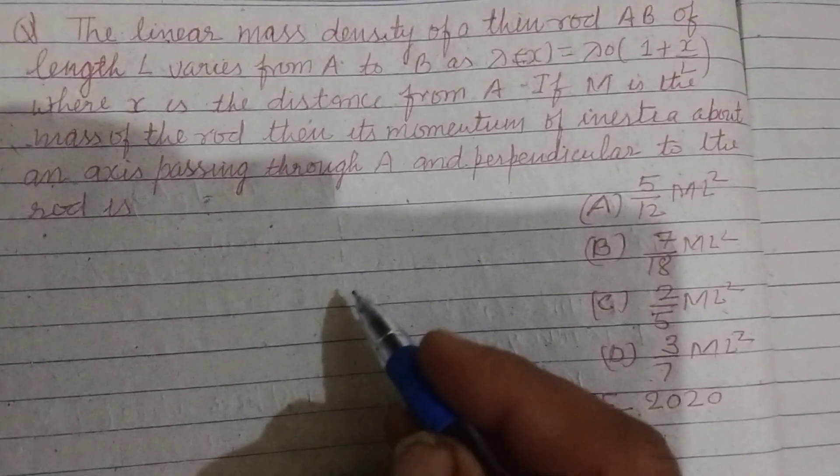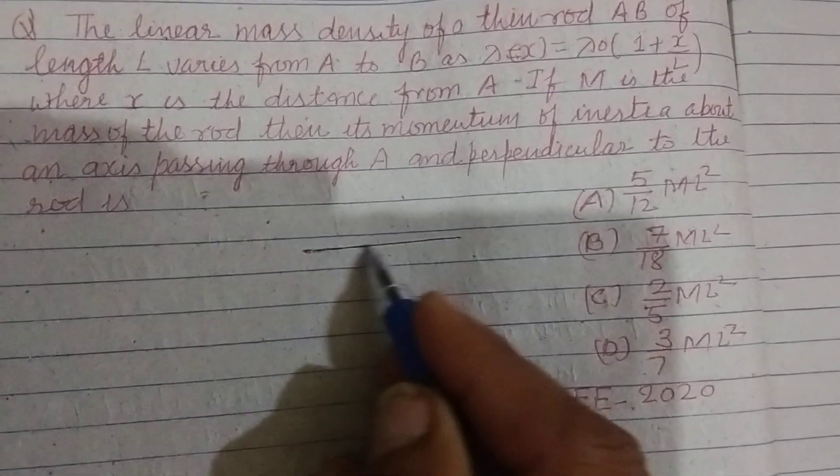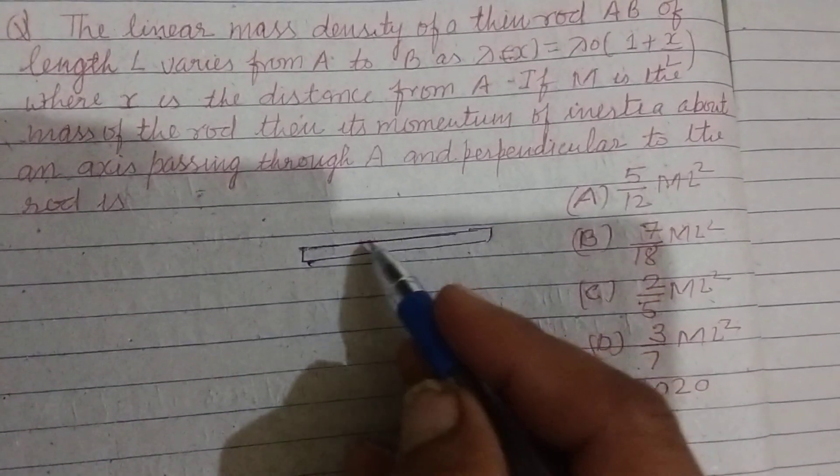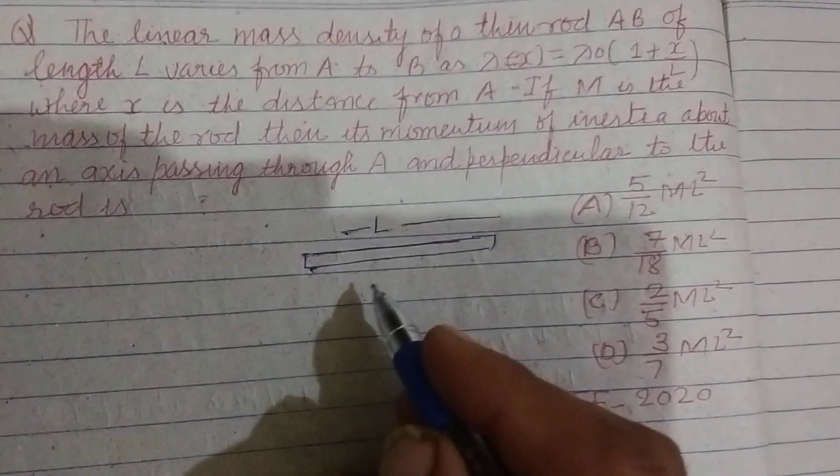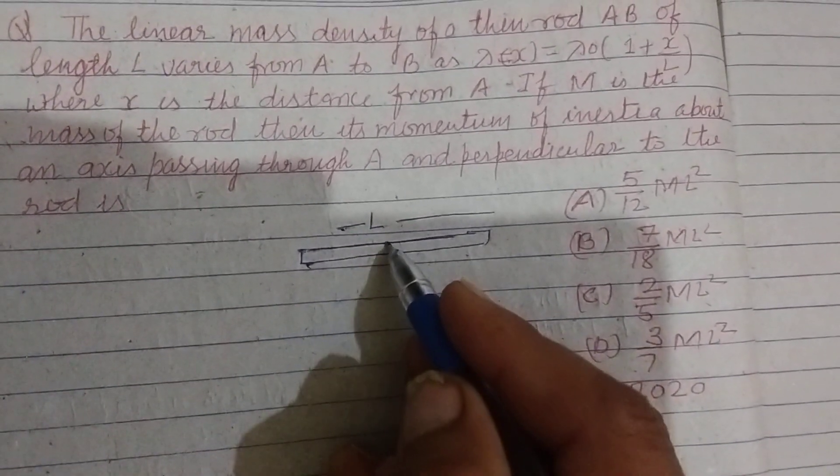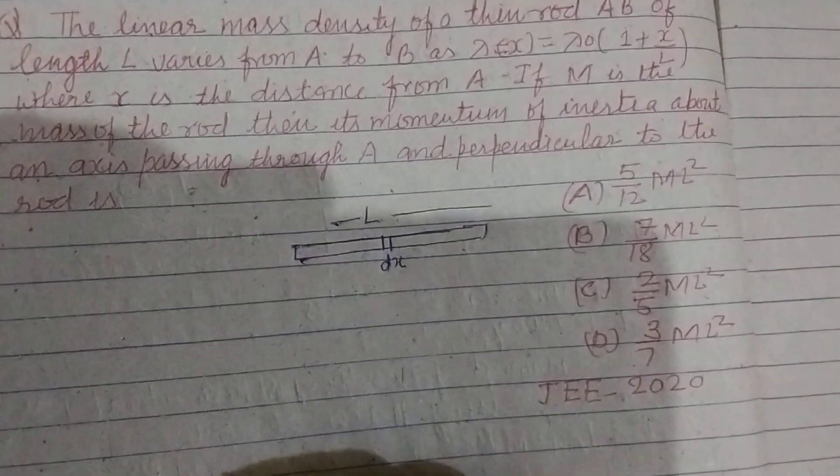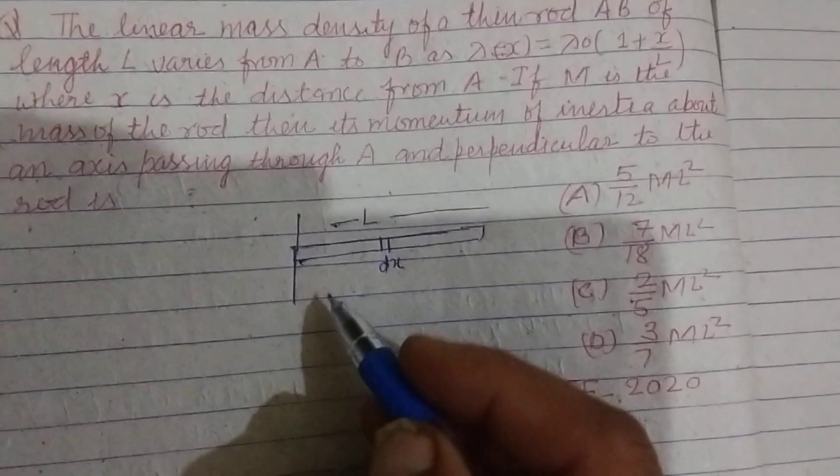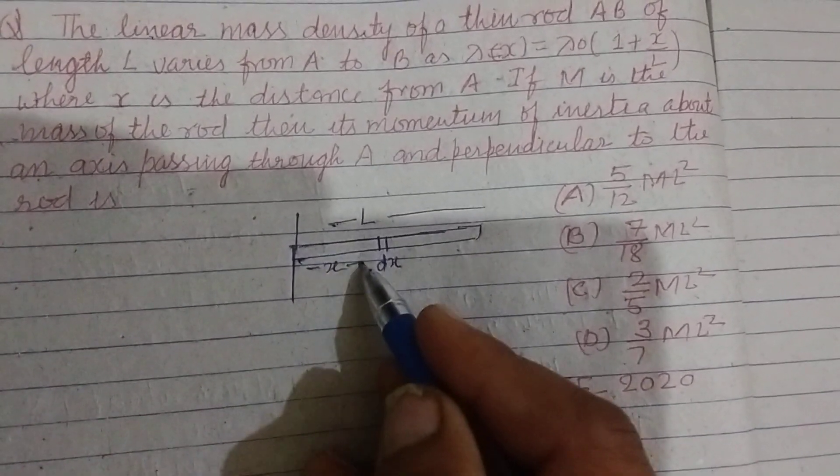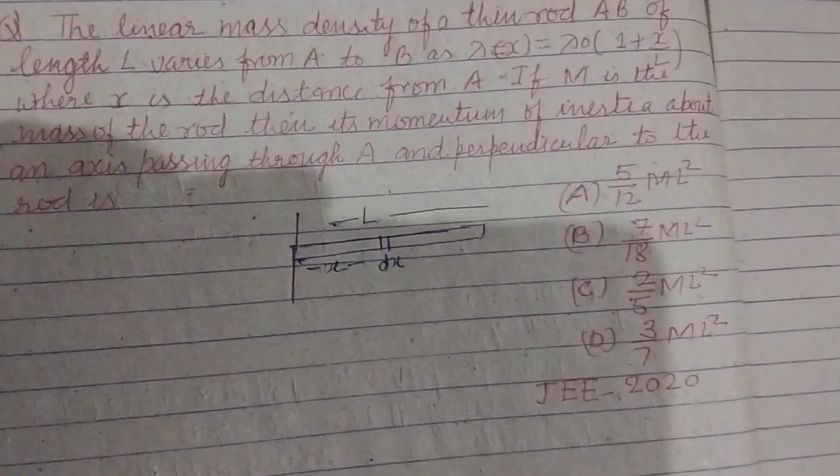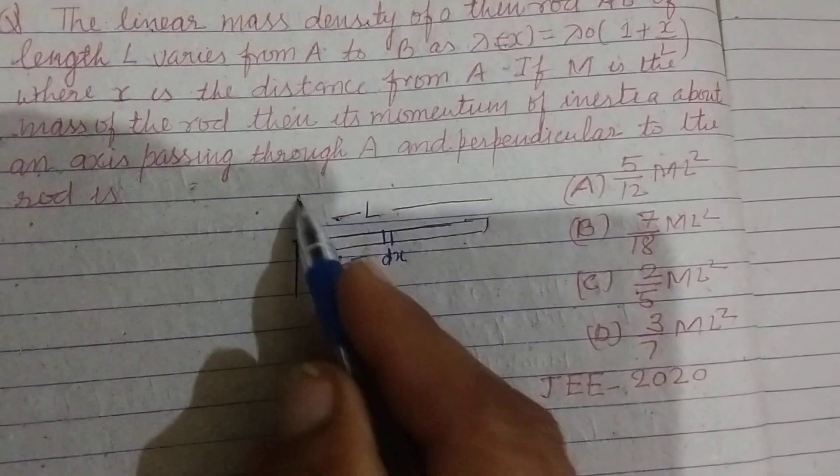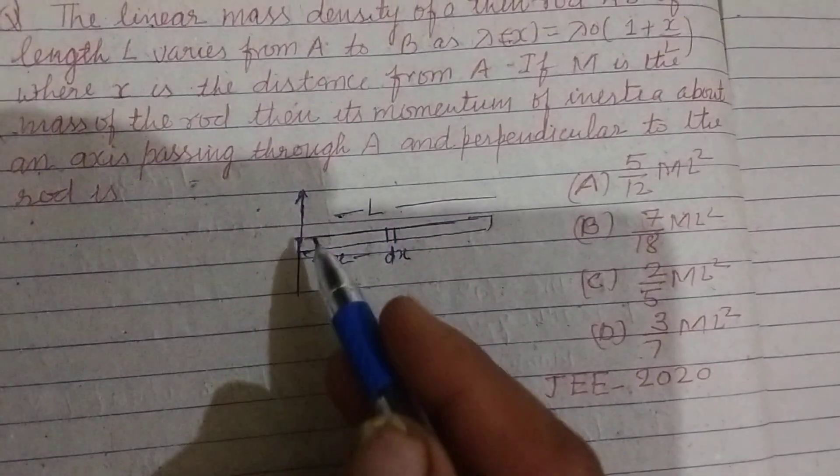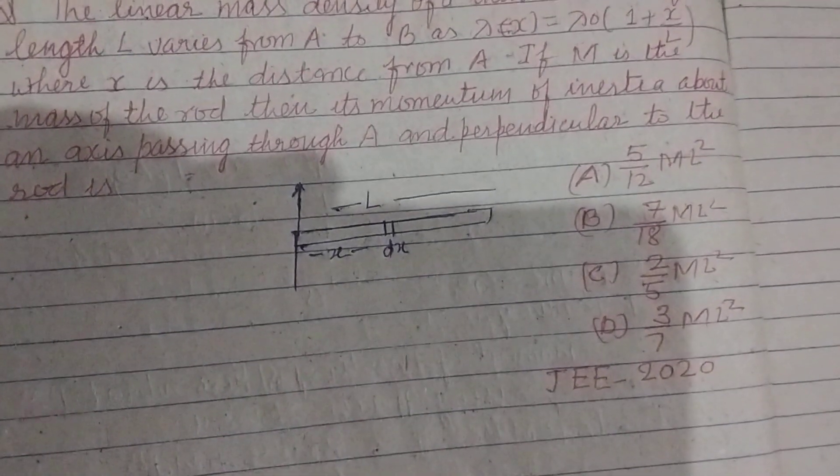So students, here we take a rod of length L. And we also take a small element of dx breadth and its distance from one end is x. And this is the line passing through perpendicular to the axis.